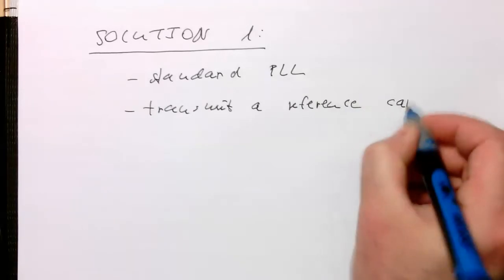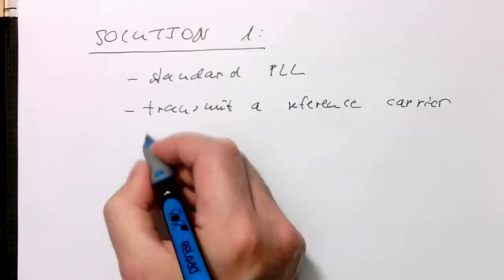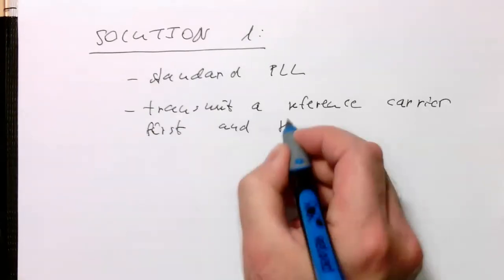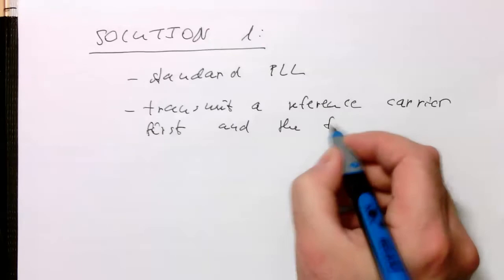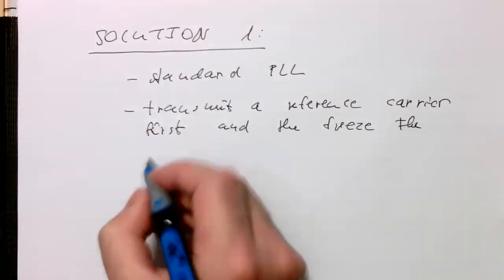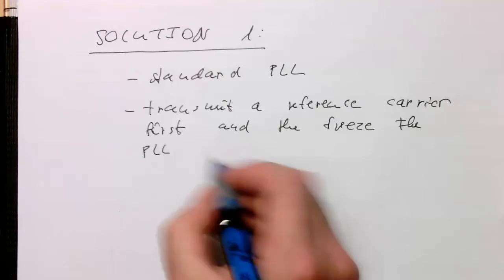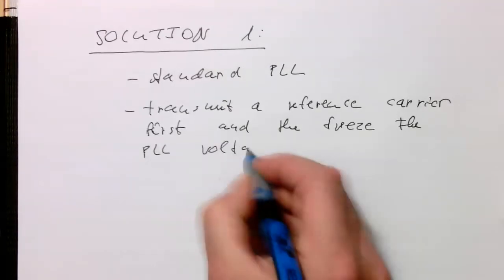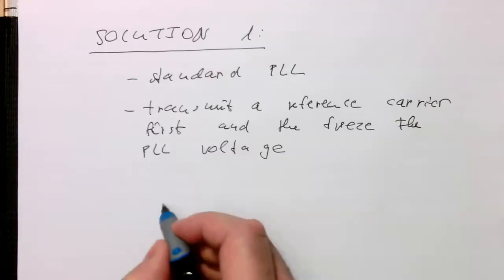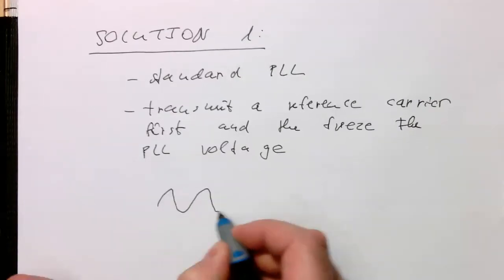We transmit this reference carrier first, and then once the PLL has locked onto this carrier, then we freeze the PLL voltage. So if we just draw this quickly again.